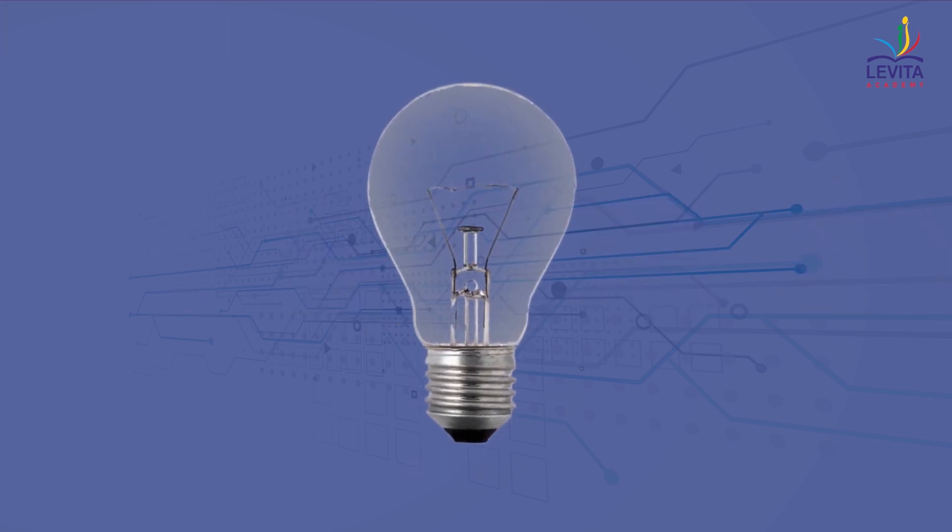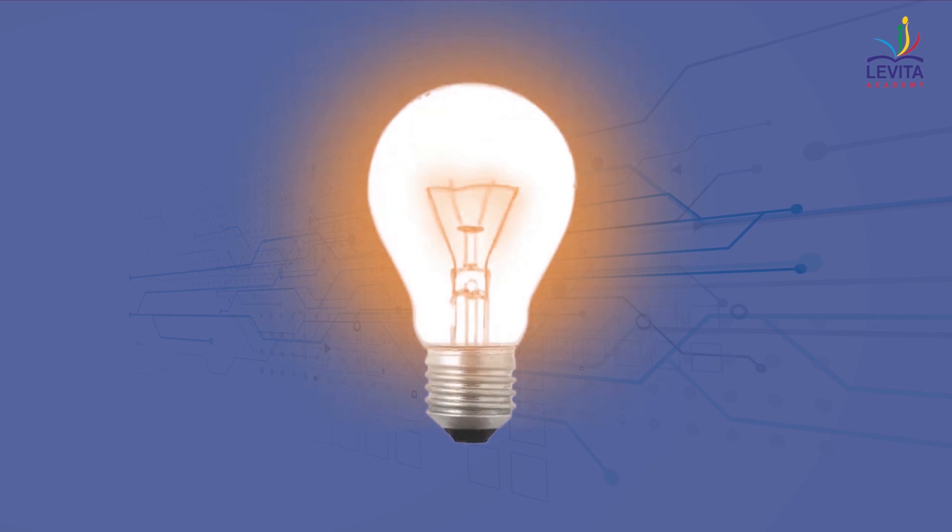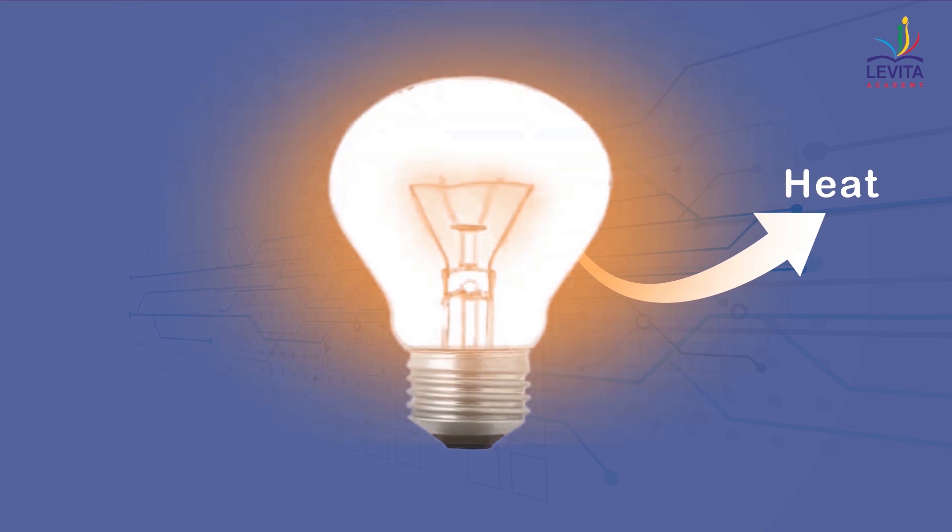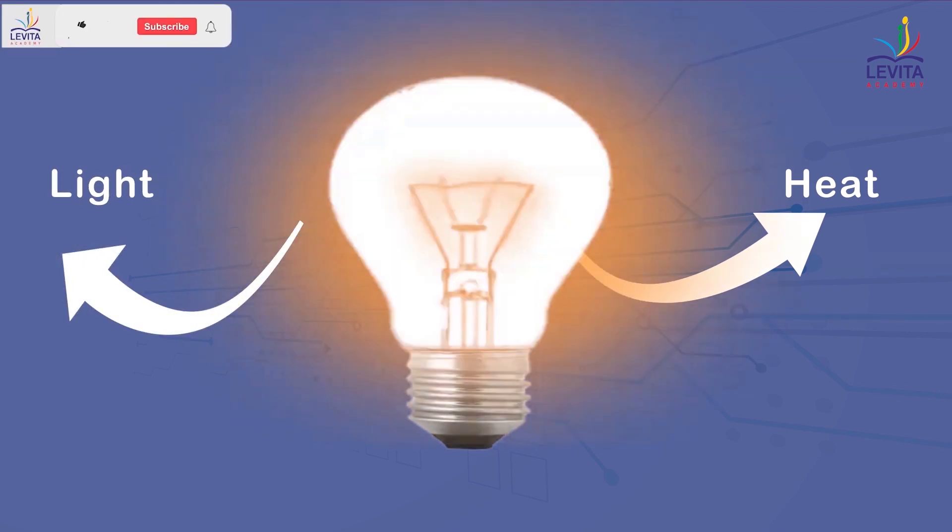We all have enjoyed the fancy incandescent bulbs used for decorations. The same bulbs were part of regular households few years back. In these bulbs, the electric heating is used to produce light. Here, the filament retains most of the heat, gets hot and emits light without melting at such high temperatures.